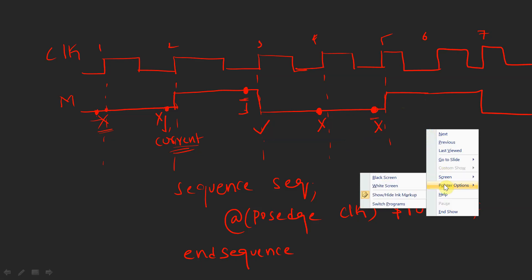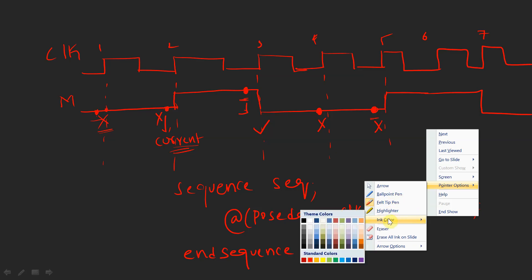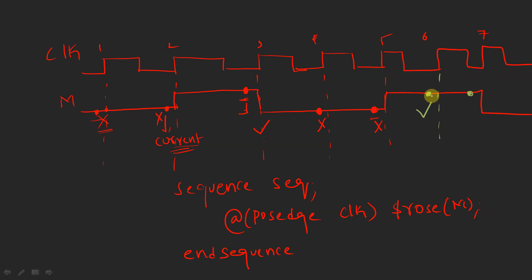At the sixth clock edge, the value is one and at the previous evaluation point it was zero — there is a rising edge transition, so the assertion passes. At the seventh clock edge, the current evaluation point value is one and the previous evaluation point value was also one, so it passes.